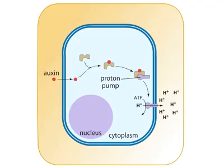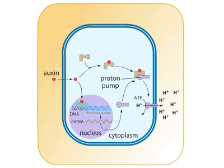Auxin also enters the nucleus and by a multi-step process turns on the expression of genes. One such gene codes for the proton pump that is so important in acidifying the cell wall. Auxin, therefore, both increases the synthesis of the proton pumps and helps guide their insertion into the plasma membrane.